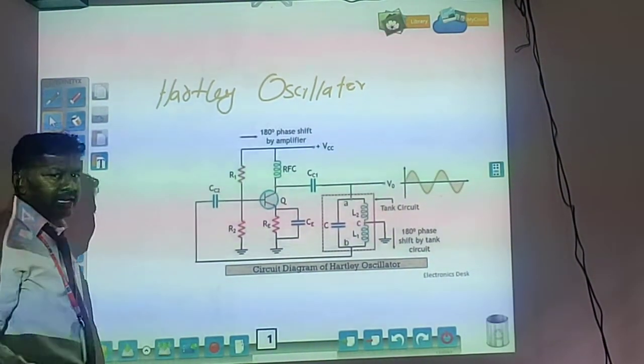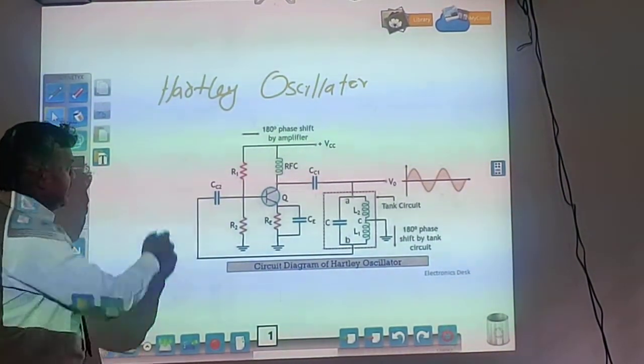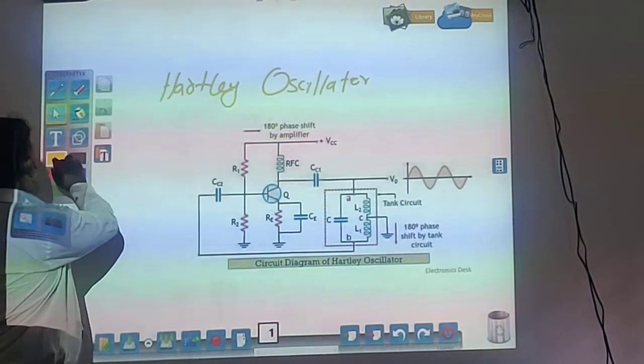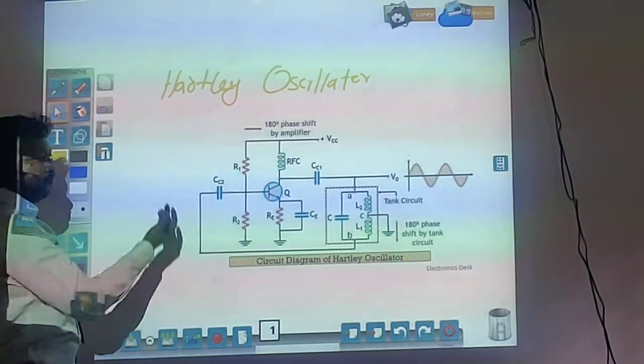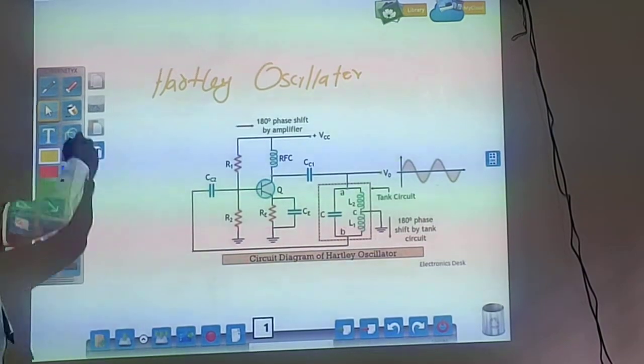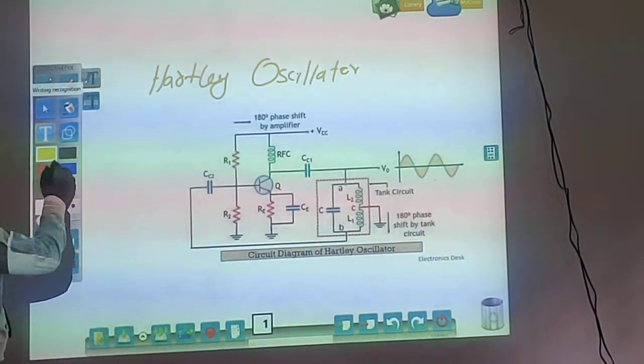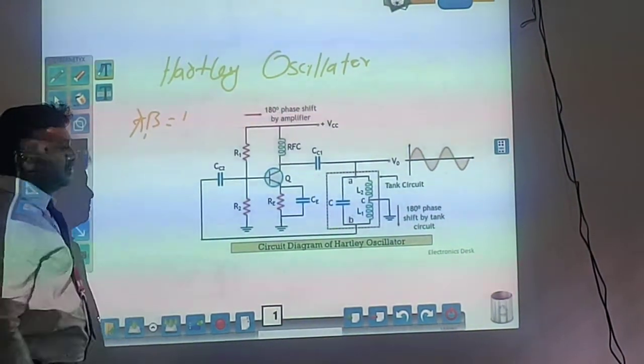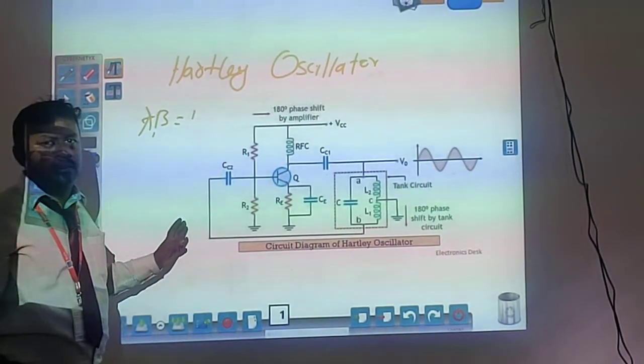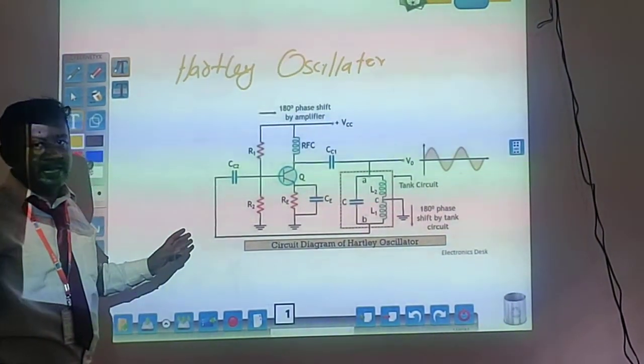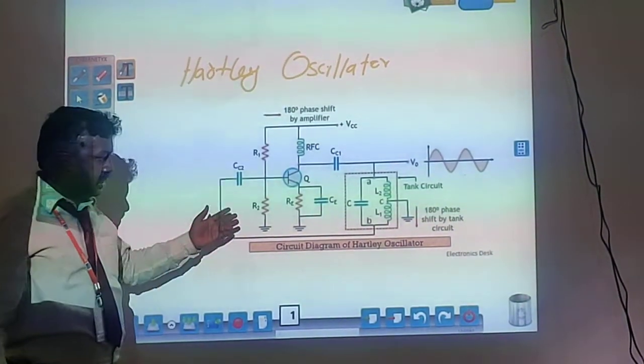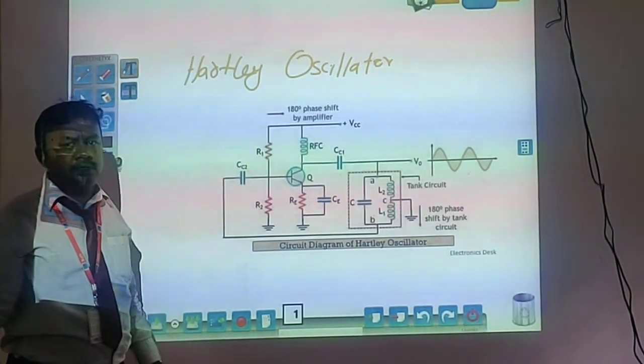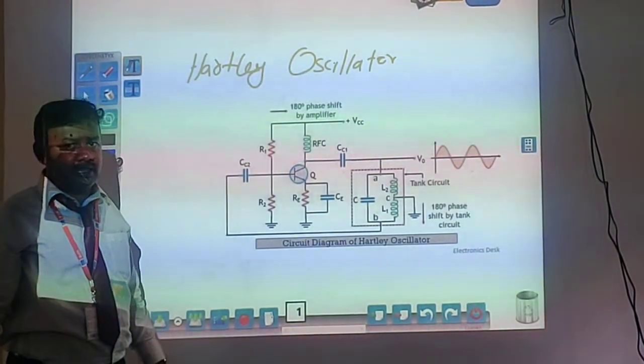we know the conditions for oscillation. First, Aβ should equal 1, that is the magnitude of the loop gain should equal unity. The second condition is the phase shift of the loop should equal 0 degrees or 360 degrees.